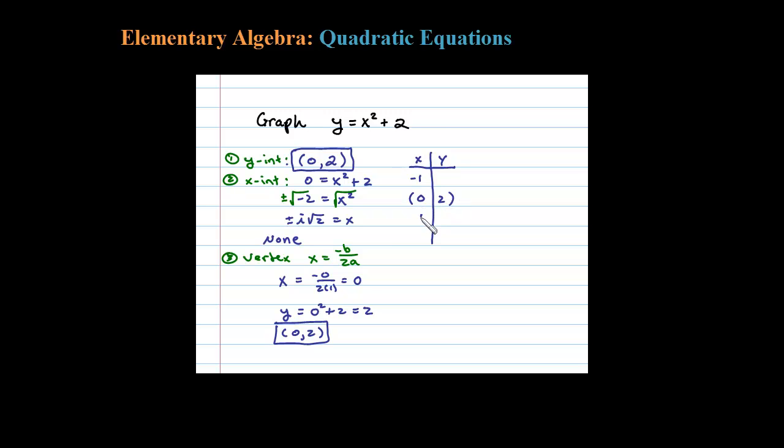When x is -1, substituting that in, negative 1 squared plus 2 is 3. So the corresponding y-value there would be 3.